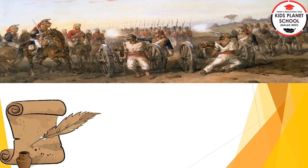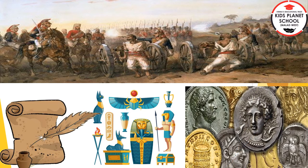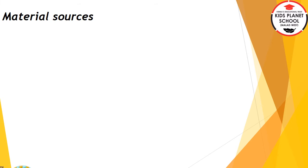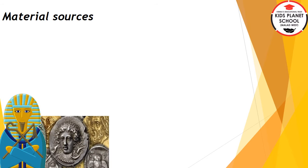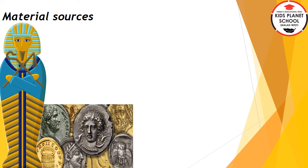What we can gather from history are things such as ancient objects, structures, sculptures, pots, coins, inscriptions, and cave paintings. These things we call the sources of history.